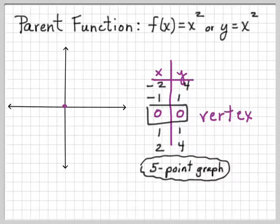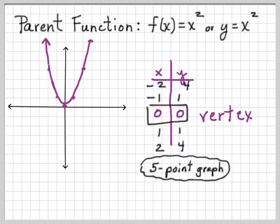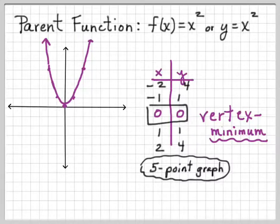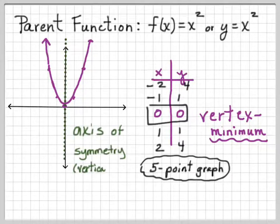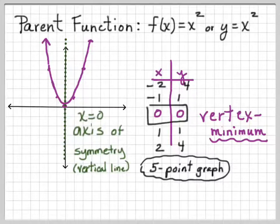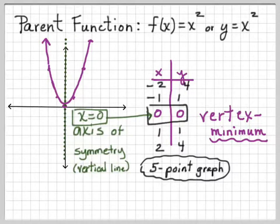If we plot those points, we get our parabola. We can see that the vertex is a minimum — if the parabola opens upward, the vertex is the lowest point. The axis of symmetry runs straight down the middle of the graph and cuts it in half, just like a mirror, because it's a line of reflection. The way we find it is x = 0, which is just the x-value of the vertex.